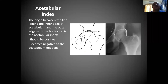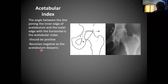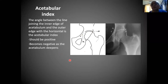The next sign is the acetabular index. This index lies between the line joining the inner edge and outer edge of the acetabulum with the horizontal — known as the acetabular index. It should be positive normally. It becomes negative as the acetabulum deepens — goes right inside — and that's why you will have a negative sign in these patients. That is called the acetabular index.